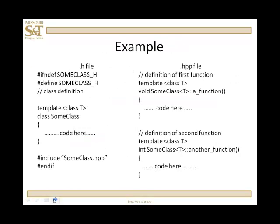Here's an example of how that's done. We have on the left a .h file with the usual preprocessor commands, the pound ifndef and the pound define, and the pound endif. Notice then we have our definition of the templated class, followed by a pound include for the .hpp file. The .hpp file will contain the definitions of the various functions contained in that class.